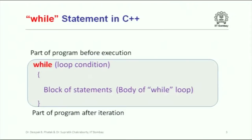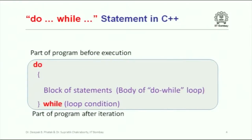The specific looping constructs in C++ that you would have seen in the lectures: the while statement, where you write the keyword 'while', put the loop condition, and then the block of statements which is the body of the while loop. The next construct is the do-while, where the do and while keywords are used, the looping condition comes at the bottom, and the block of statements forms the body in between.